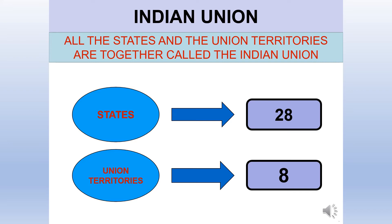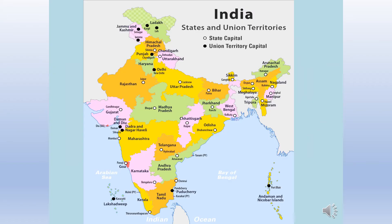There are 28 states and 8 union territories in India. Look at the map of India — here you can see 28 states and 8 union territories along with their capitals. Rajasthan is the largest state and Goa is the smallest state in India.